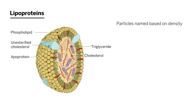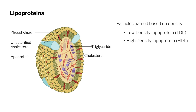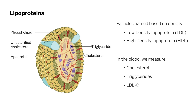The particles come in different names, largely based on their density — like low-density lipoprotein or LDL, and high-density lipoprotein or HDL. In the blood, we measure cholesterol, triglycerides, LDL cholesterol (that's the amount of cholesterol within the LDL particles), and HDL cholesterol (that's the amount of cholesterol within the HDL particles).